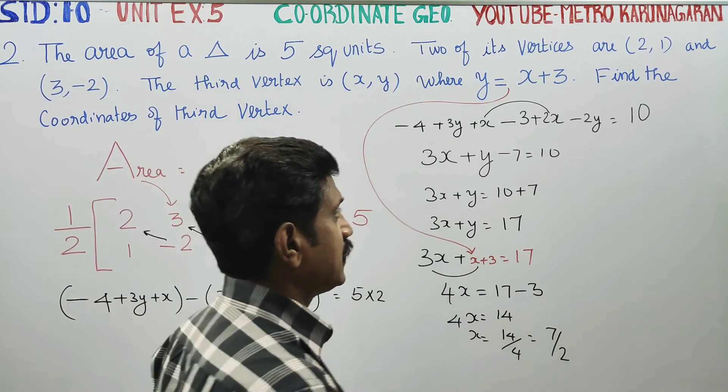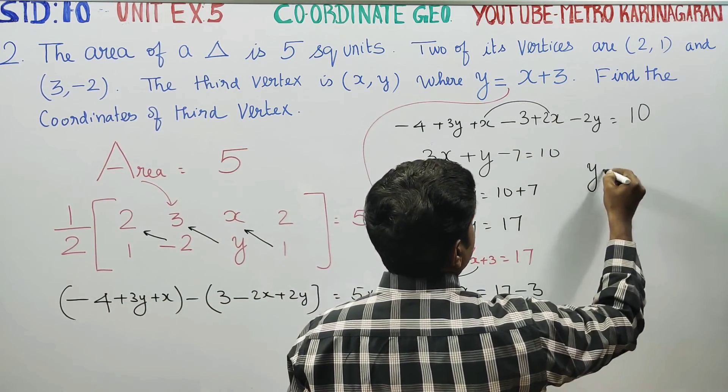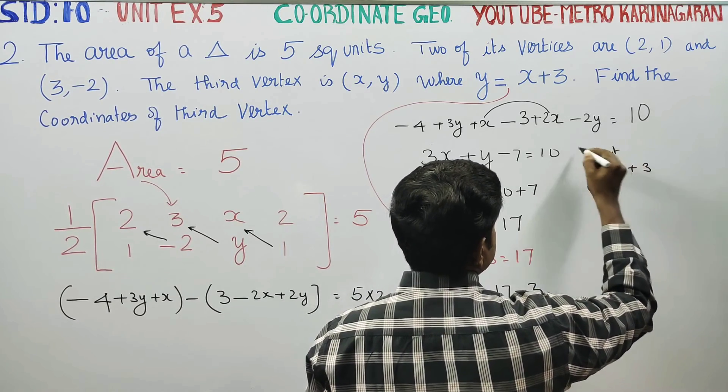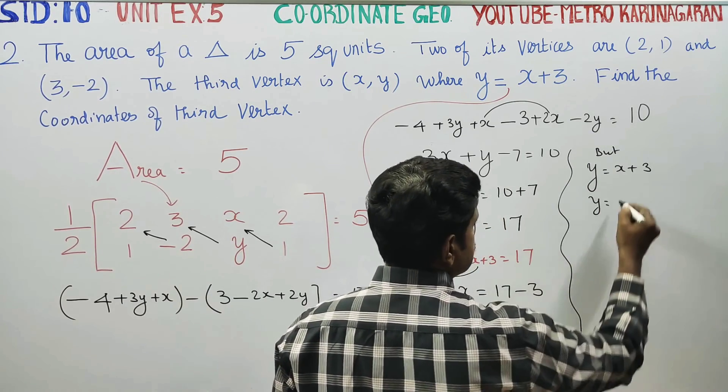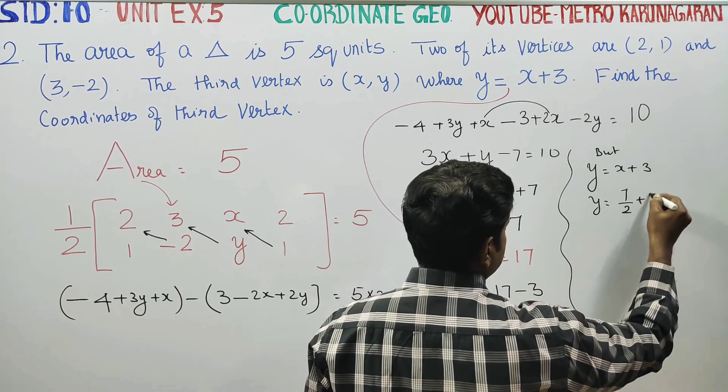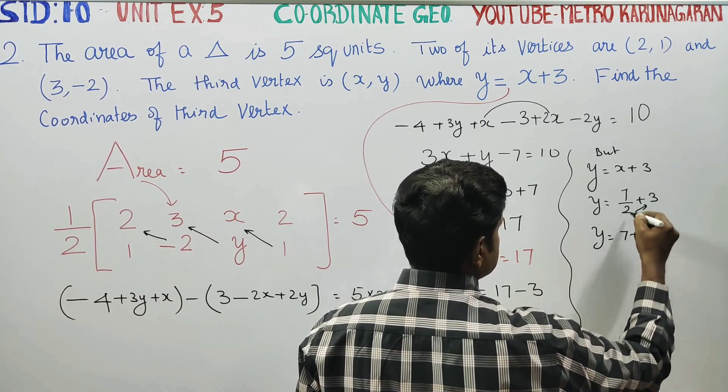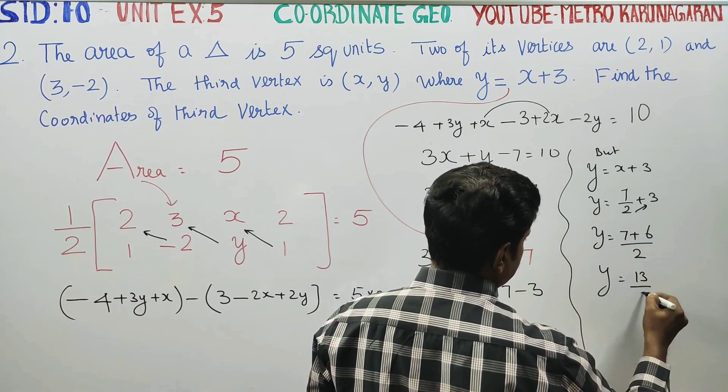Now to find y. Given y is equal to x plus 3. y is equal to x value is 7 by 2, so 7 by 2 plus 3. Cross multiply: y is equal to 7 plus 6 by 2. y is equal to 13 by 2.